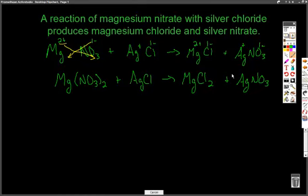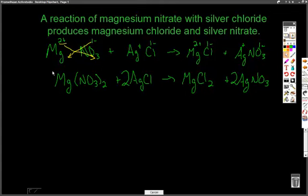Now we need to balance this. The AgNO3 is going to be balanced with a 2. Now we have 2 nitrates on each side, and we're going to need 2 chlorines. The 2 here gives us 2 chlorines on each side. The silvers are also 2, and the magnesiums are 1 each. Now that we have the balanced reaction, we can put that information to work and determine the actual stoichiometry — the actual measurements behind this.